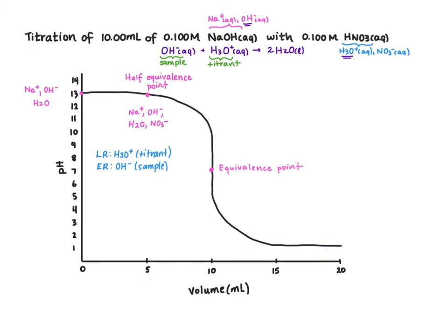At our equivalence point we are going to have no hydroxide and no hydronium left, so just the products of our reaction and our spectator ions. So we will have water, sodium, and nitrate. Water, sodium, and nitrate are all neutral species. None of them have a pH above or below 7, so that is why the pH at our equivalence point is also 7.